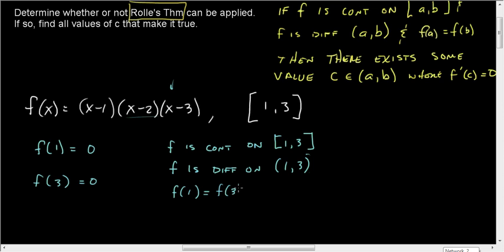F is continuous on [1,3]. F is differentiable on the open interval (1,3). And F(1) is equal to F(3). We have satisfied all three of the conditions. So now we may go ahead and say then there exists some value C in (a,b) where the derivative is 0.